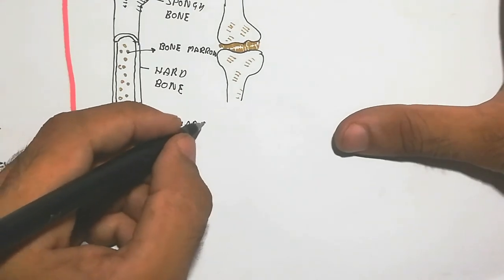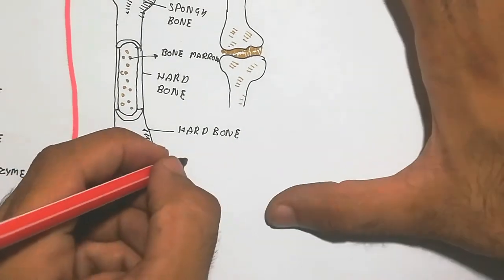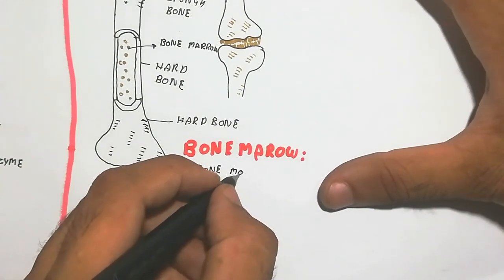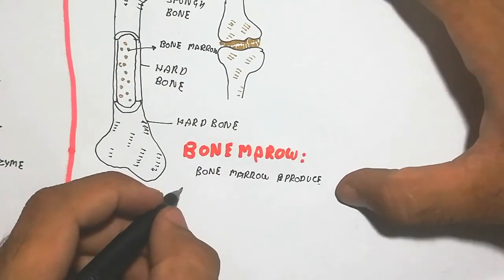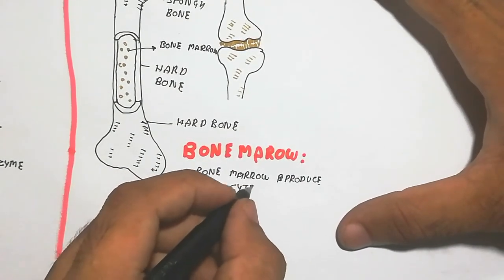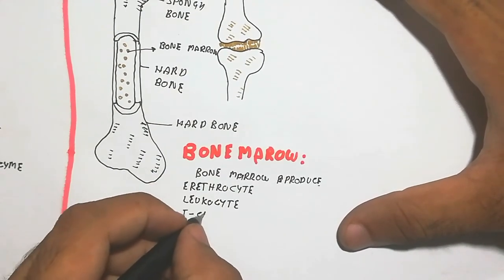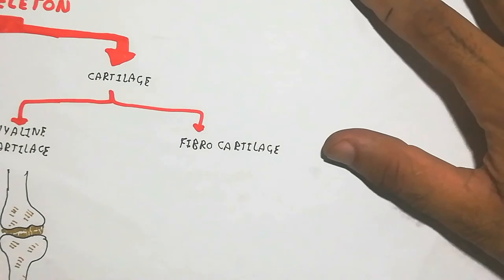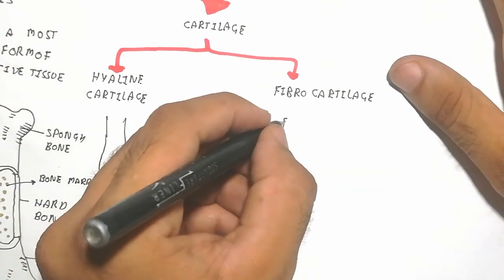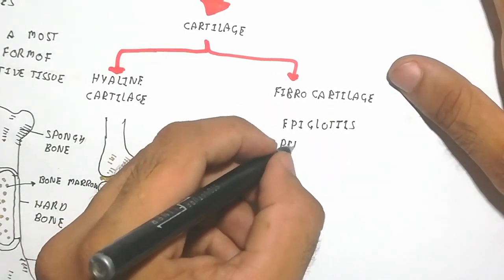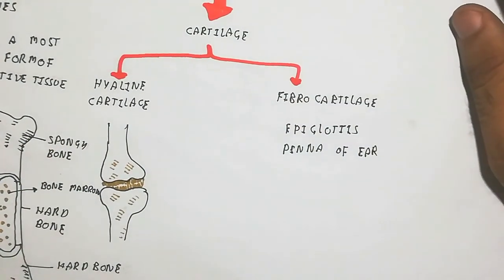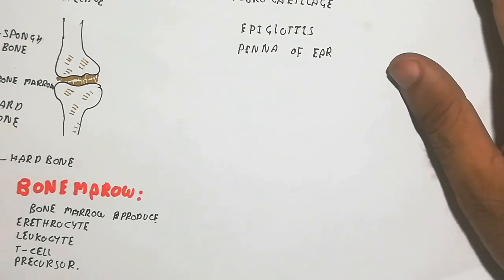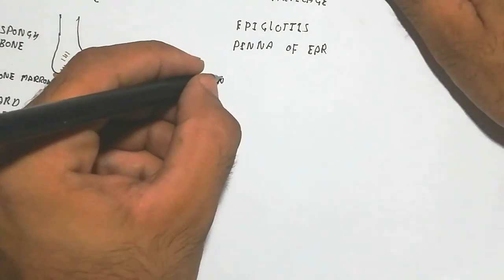Bone marrow produces erythrocytes, leukocytes, T cells, and precursors of T cells, which are used for the immune system. The bone marrow is present inside the bone, is soft, and is white in color. Fibrocartilage is present in the epiglottis and pinna of the ear. The functions of the skeleton include structural strength, blood cell production, and movement.